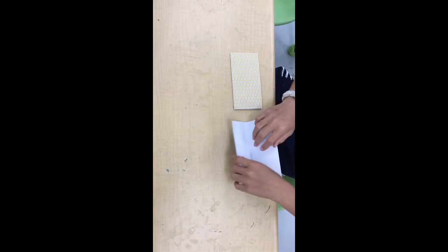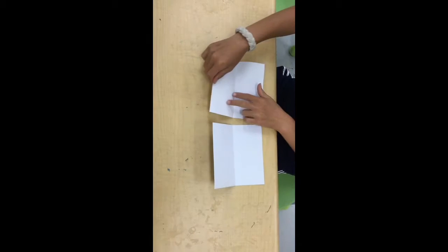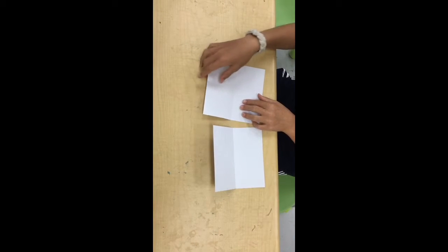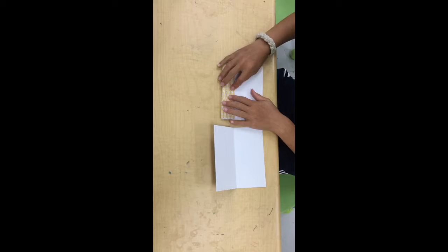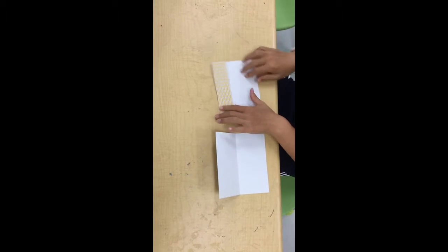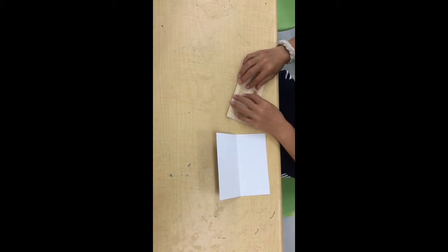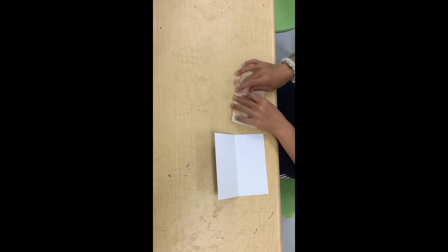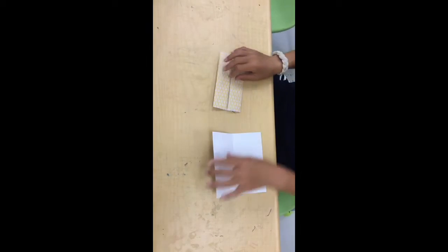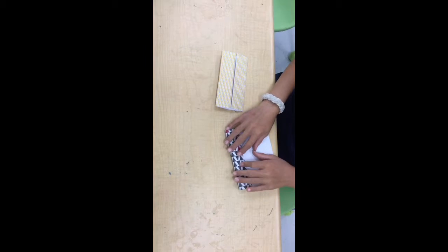Alright, so now once you've done that you open both up and you see this line in the middle, the crease. You're going to fold both sides of that you folded to the line. So then one should look like that, and then do the same for the other.